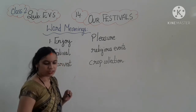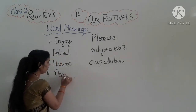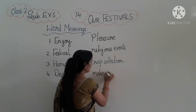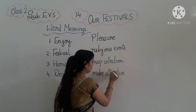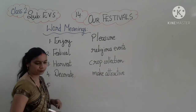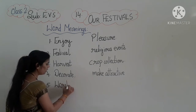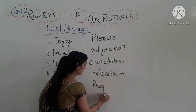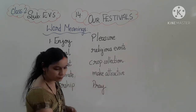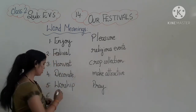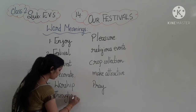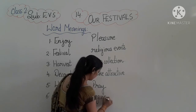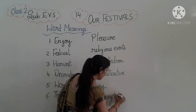The fourth word is 'decorate.' Decorate means to make attractive. Fifth word is 'worship.' Worship means pray. Sixth word is 'throughout.' Throughout means beginning to the end.